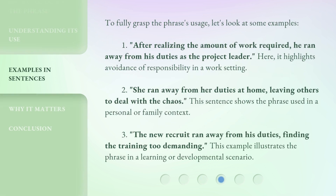To fully grasp the phrase's usage, let's look at some examples. First: after realizing the amount of work required, he ran away from his duties as the project leader — highlighting avoidance of responsibility in a work setting. Second: she ran away from her duties at home, leaving others to deal with the chaos — used in a personal or family context. Third: the new recruit ran away from his duties, finding the training too demanding — illustrating the phrase in a learning or developmental scenario.